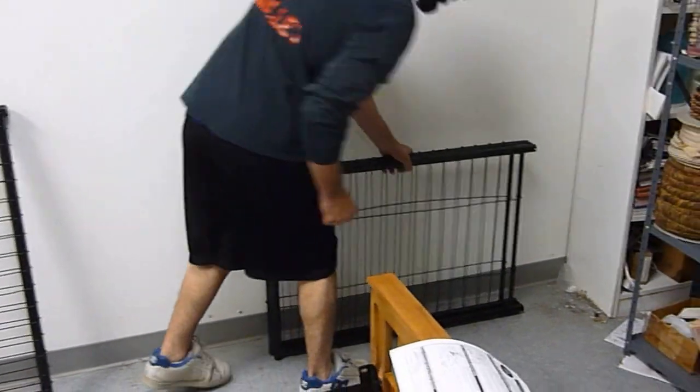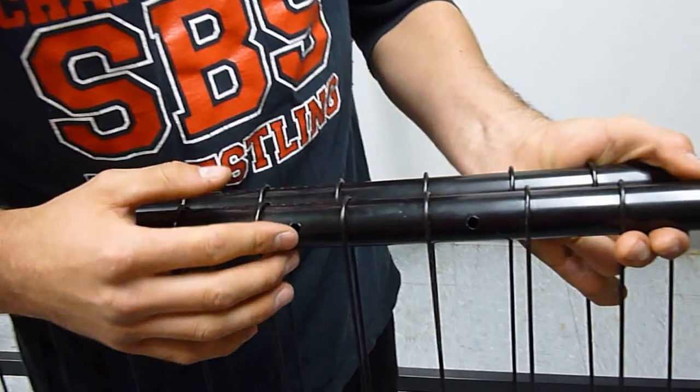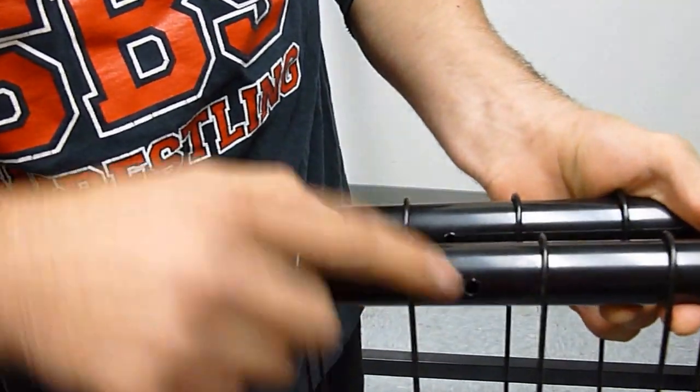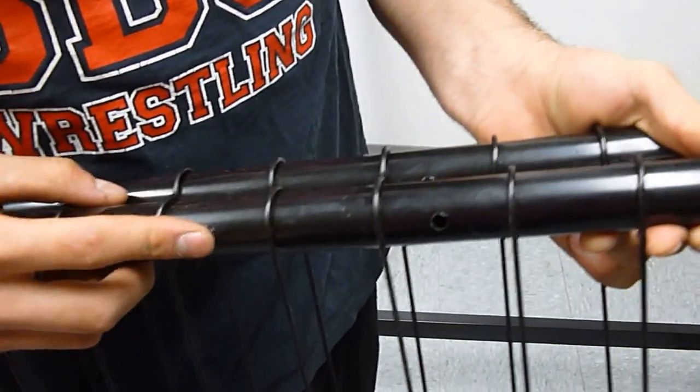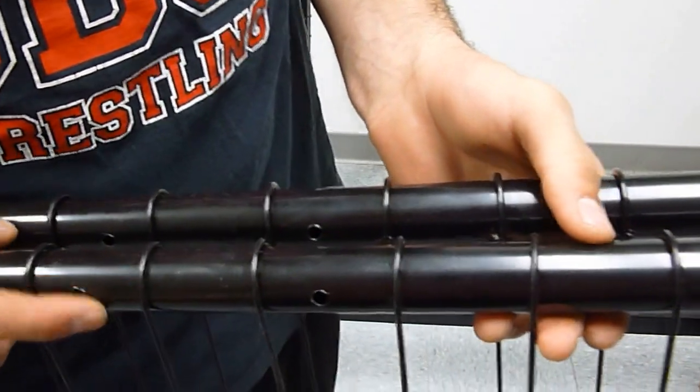I'll show you what those look like right here. On one of the frames of the futon, there's going to be four holes. This indicates that it's the seat where the retainers for the mattress will go.